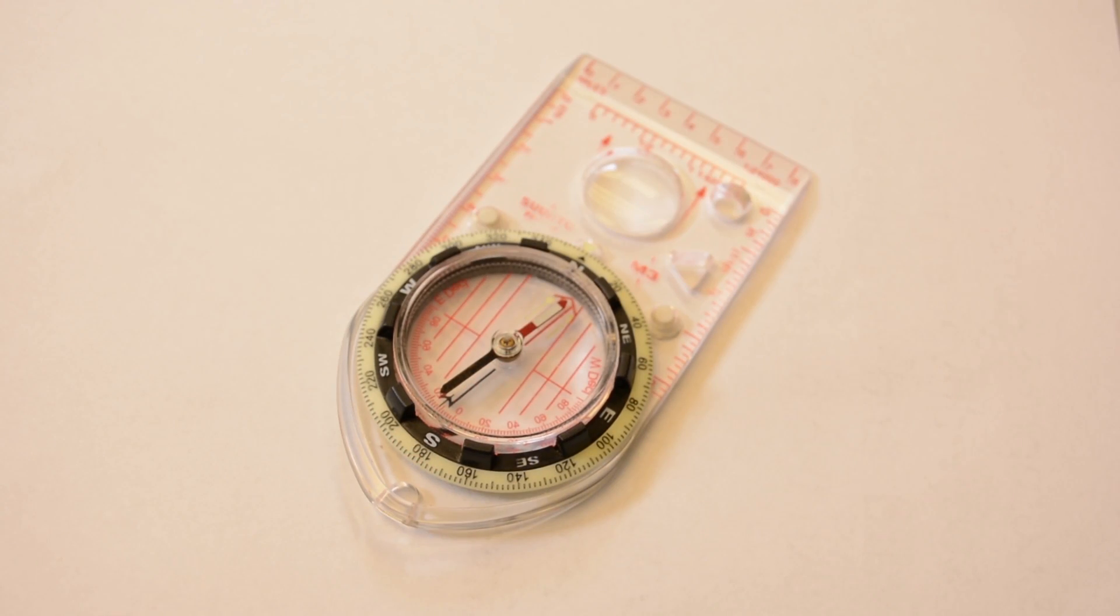Well, that's it on adjusting your Suunto compass for declination. Remember, if you adjust this one time for your local area, you shouldn't have to touch it for years to come. Measuring bearings to true north like this is the modern and much simpler way to use a compass.